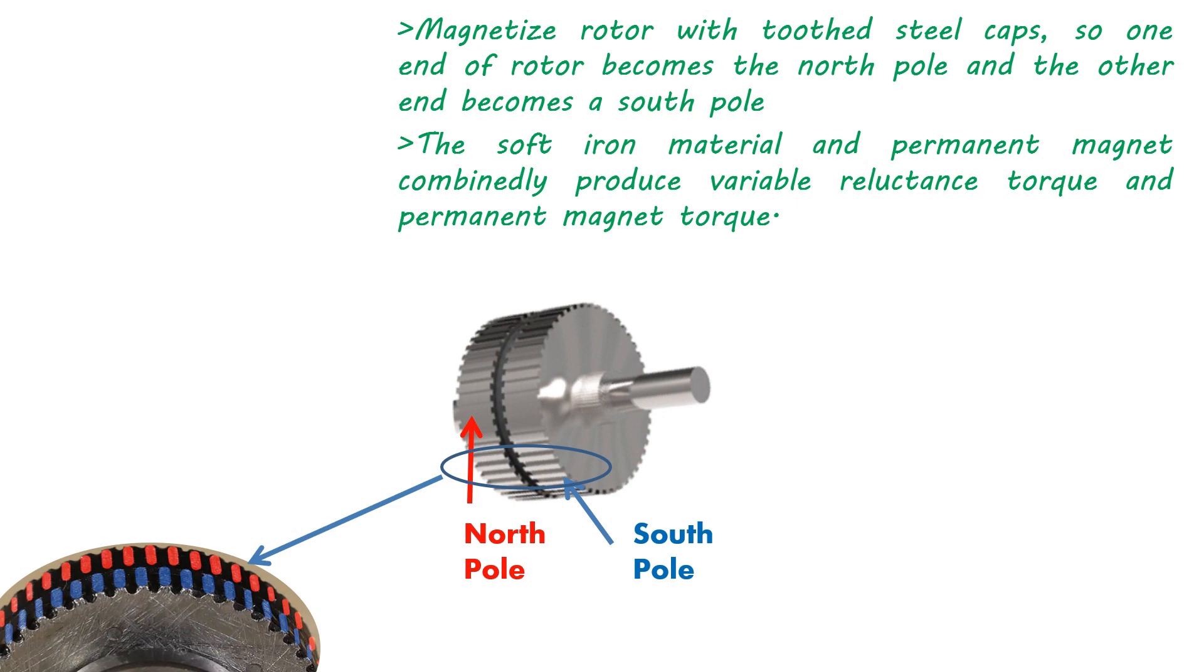The soft iron material and permanent magnet combinedly produce variable reluctance torque and permanent magnet torque. Due to this, torque production is higher than the other configuration of stepper motor.